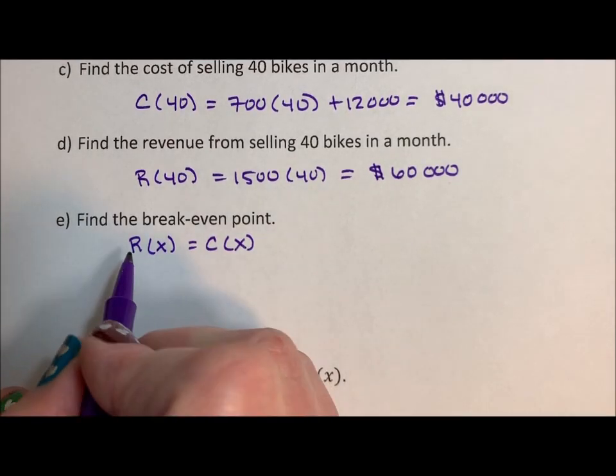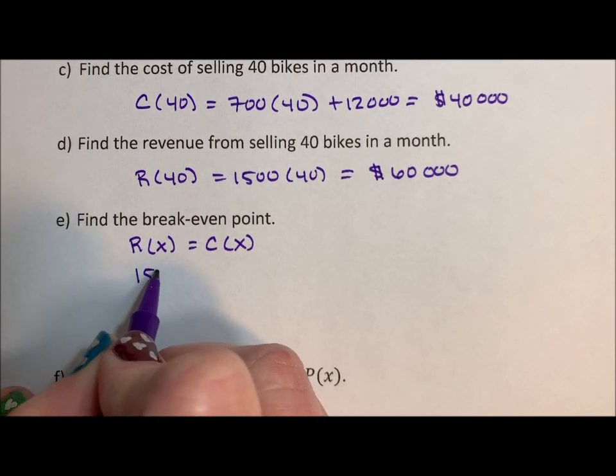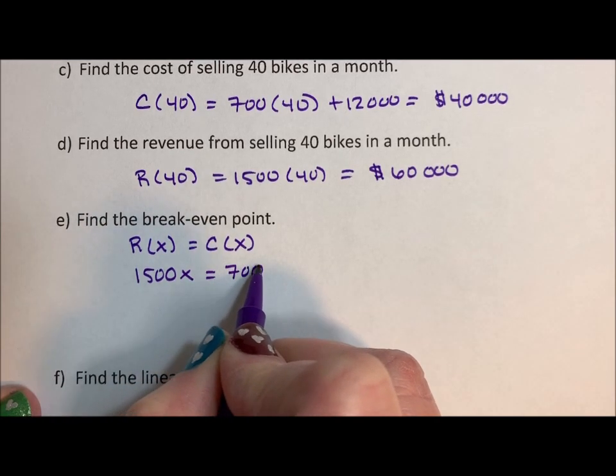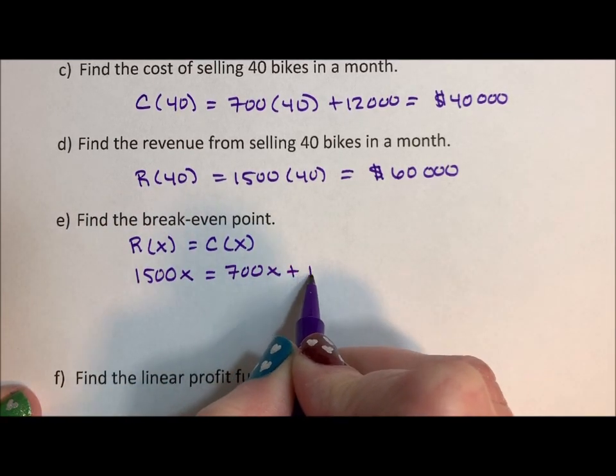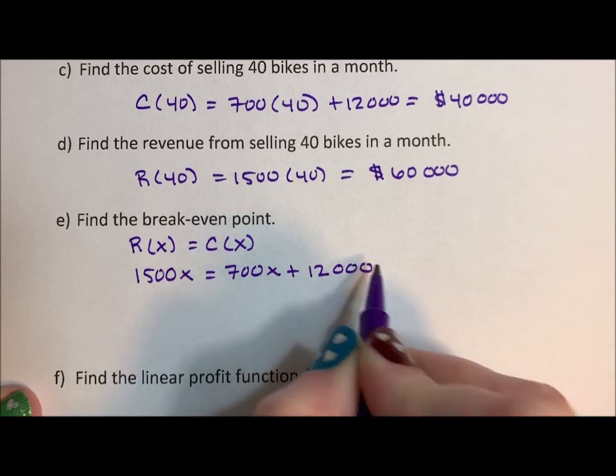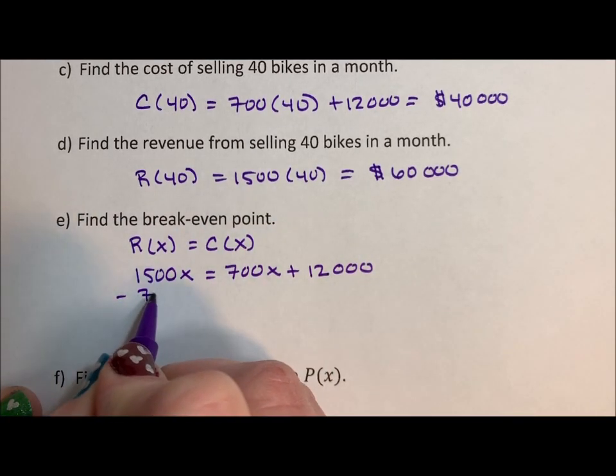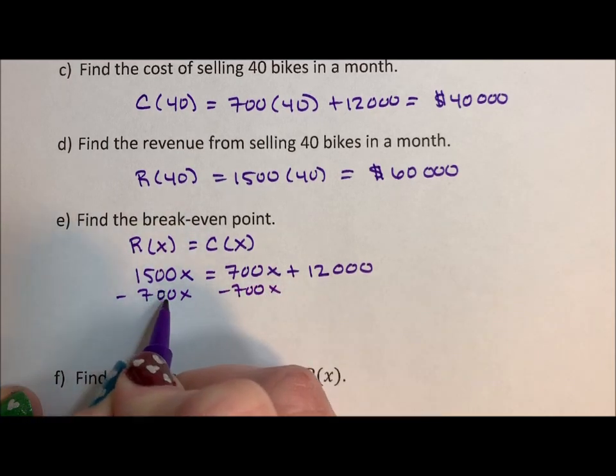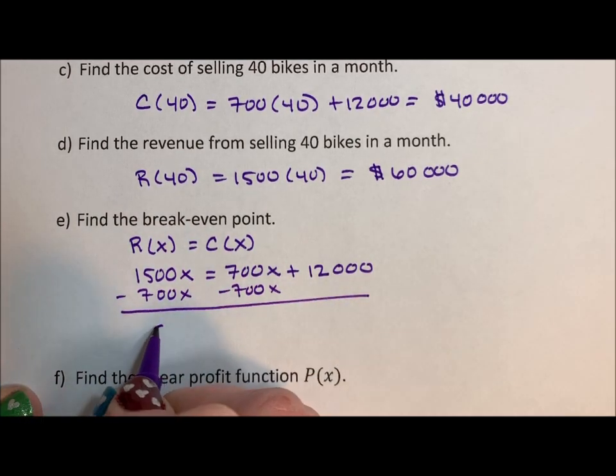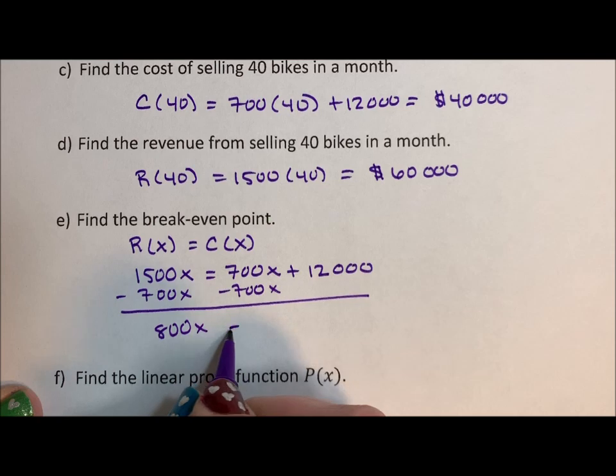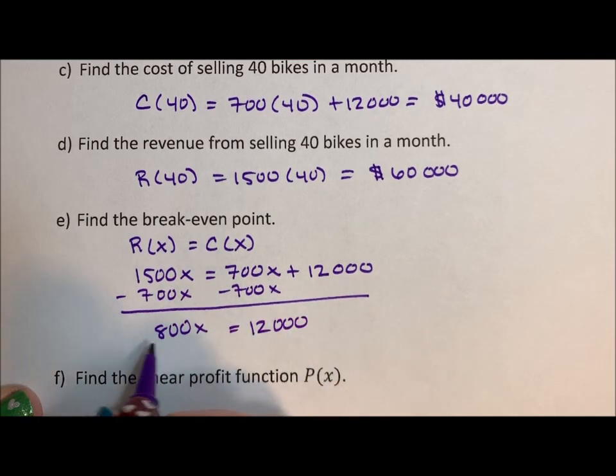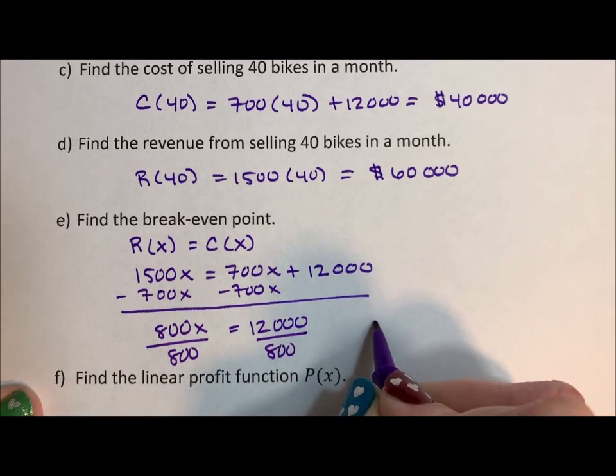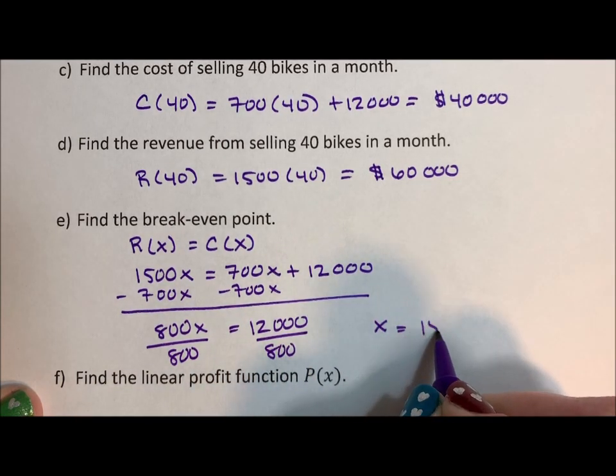So our revenue is 1500x. Our cost is 700x plus 12,000. We subtract 700x from both sides. 800x is equal to 12,000. Divide by 800. And x is equal to 15 bikes.